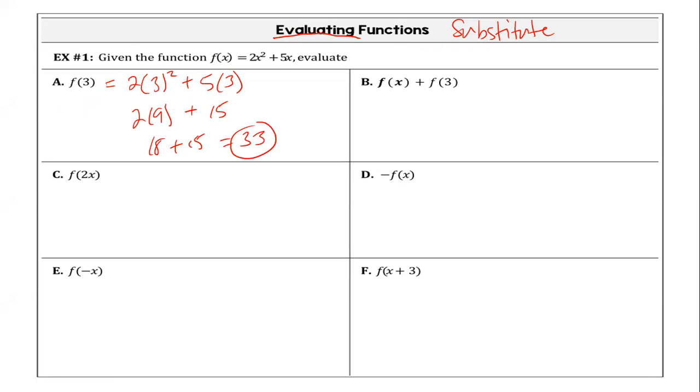Level two is now we have the original function plus that change. So we already know the value of F of three and we already know what F of X is. So we're just substituting what they are. What is F of X? F of X is two X squared plus five X. What is F of three? Plus 33. That's all you had to do. That's it. Nothing else. You just had to substitute that knowledge.